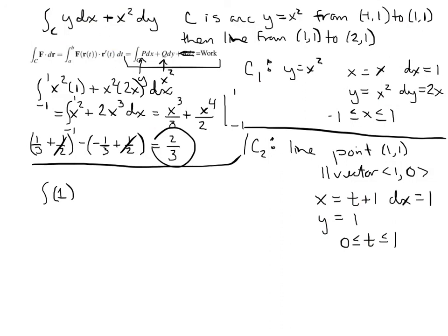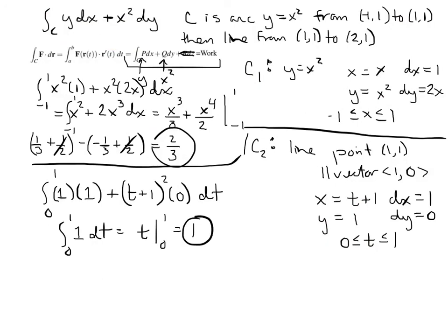x is t plus 1. Square that. Times dy. Well, the derivative of a constant is 0. And I've got to integrate from 0 to 1. So basically, I just have the integral from 0 to 1 of 1. So that's t from 0 to 1. I just get 1. And in calculating this, I need to add these together now. So I'm going to have 2 thirds plus 1, 3 thirds. So that would give me 5 thirds.